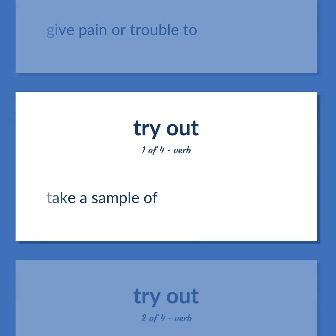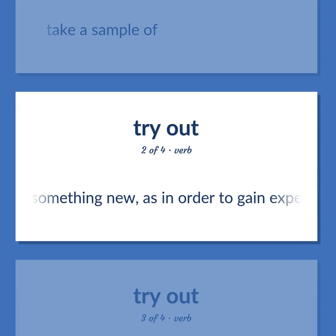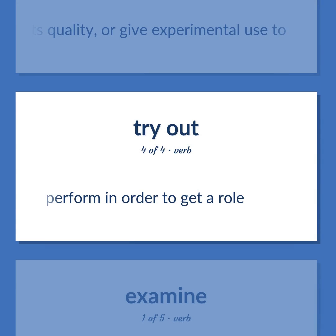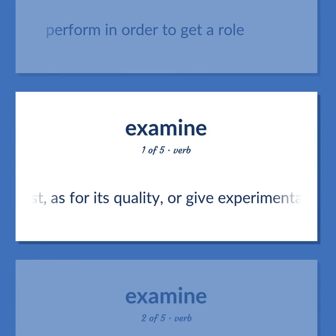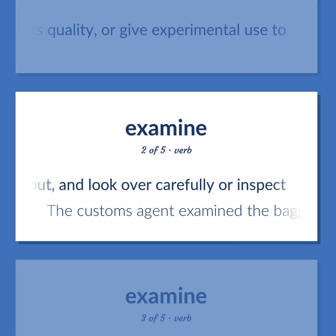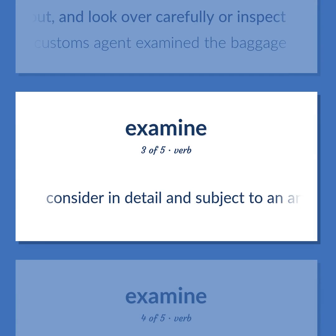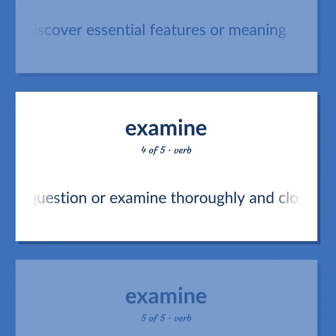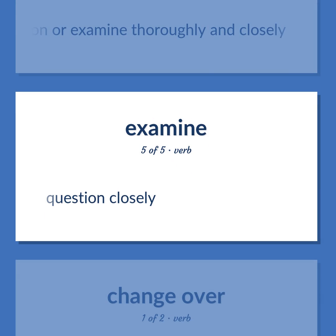Take a sample of. Try something new, as in order to gain experience. Put to the test, as for its quality, or give experimental use to. Perform in order to get a role. Put to the test, as for its quality, or give experimental use to. Observe, check out, and look over carefully or inspect. The customs agent examined the baggage. Consider in detail and subject to an analysis in order to discover essential features or meaning. Question or examine thoroughly and closely. Question closely.